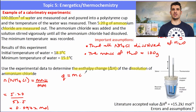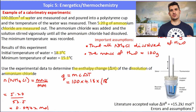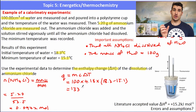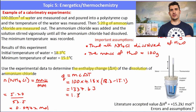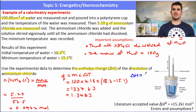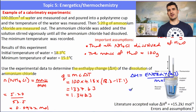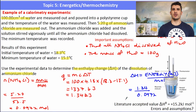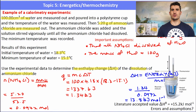Next I work out the energy absorbed by the water. Because the temperature went down, energy was absorbed. Using q = mcΔT: mass is 100 g, specific heat capacity is 4.18 J g⁻¹ °C⁻¹, and I take the absolute temperature change to avoid a negative energy value. Converting to kilojoules by dividing by 1000. Then ΔH = energy in kilojoules divided by moles: 1.34 ÷ 0.0972 = 13.8 kJ/mol.